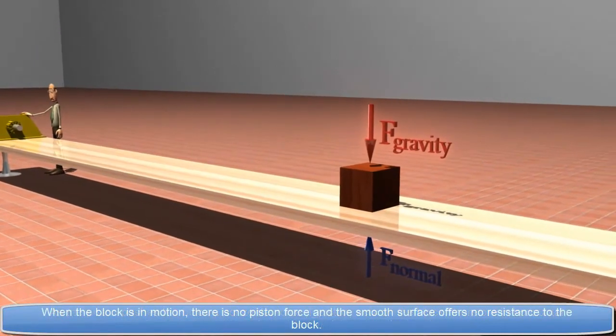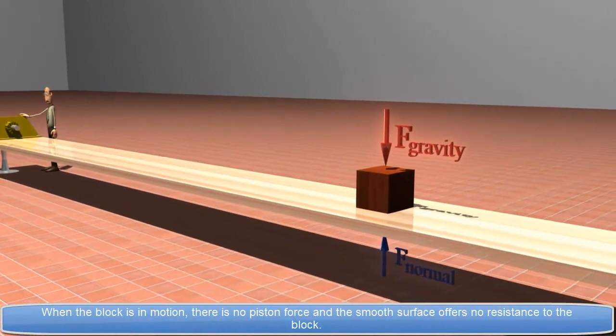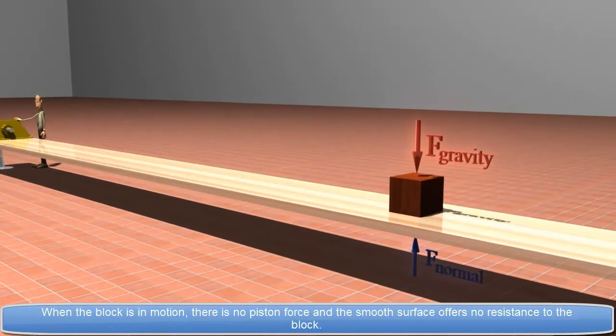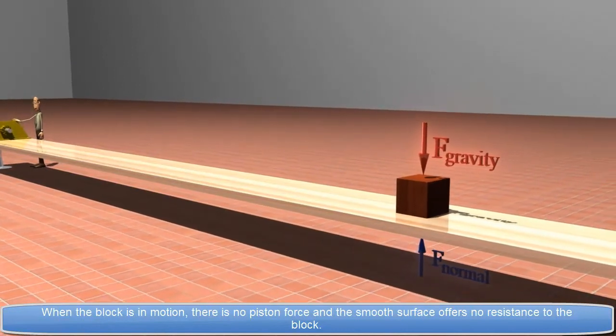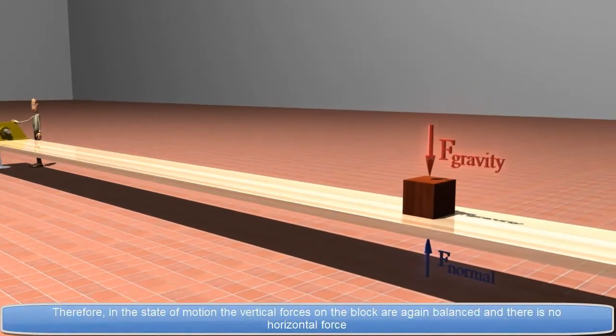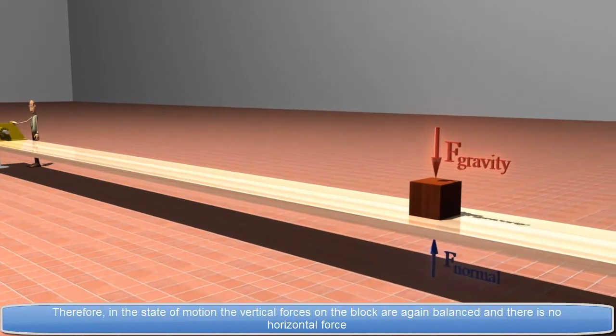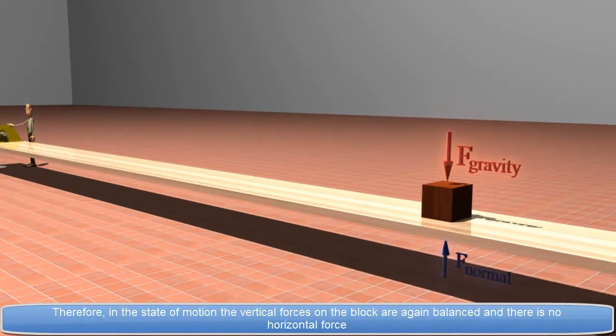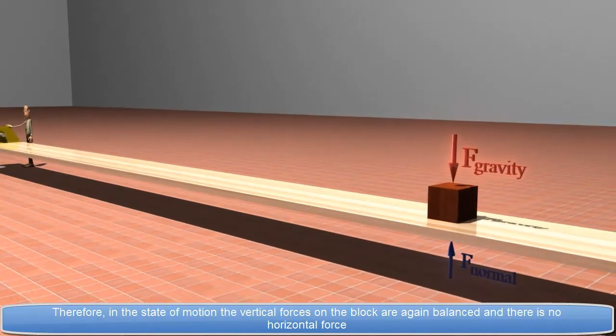When the block is in motion, there is no piston force and the smooth surface offers no resistance to the block. Therefore, in the state of motion, the vertical forces on the block are again balanced and there is no horizontal force.